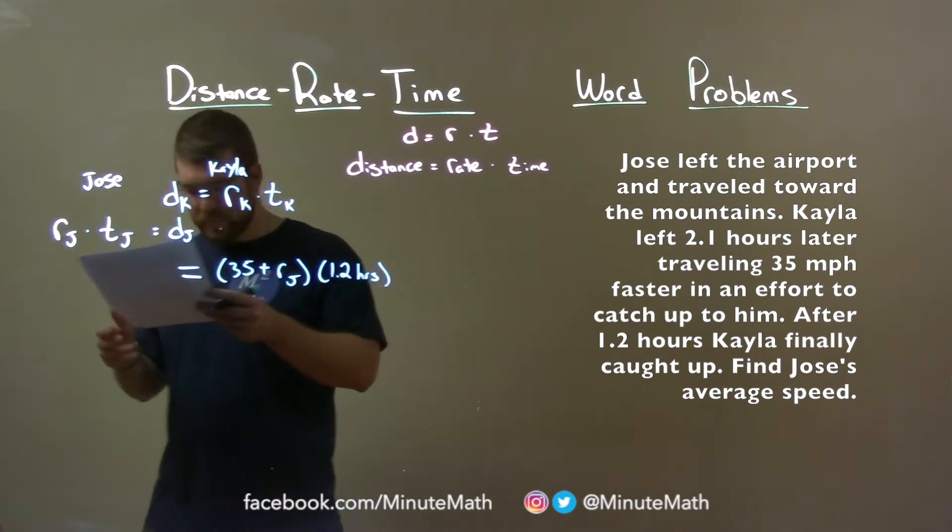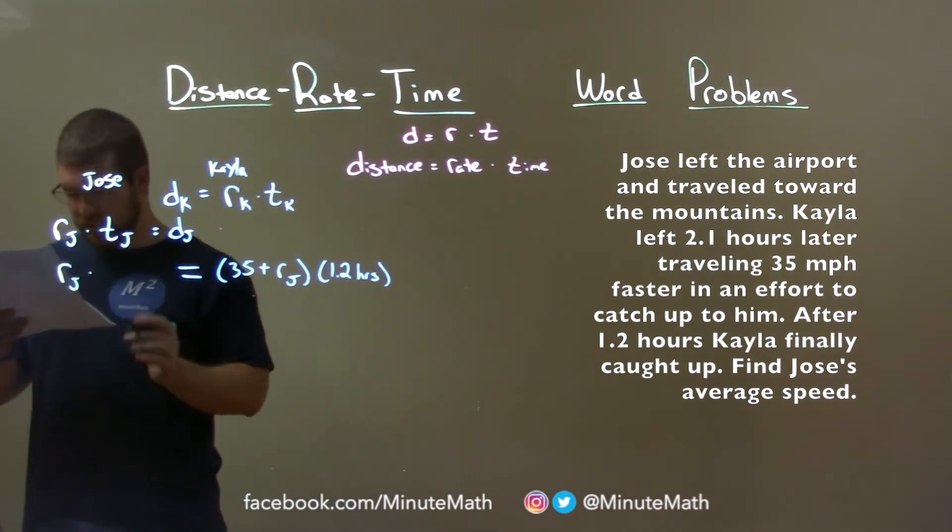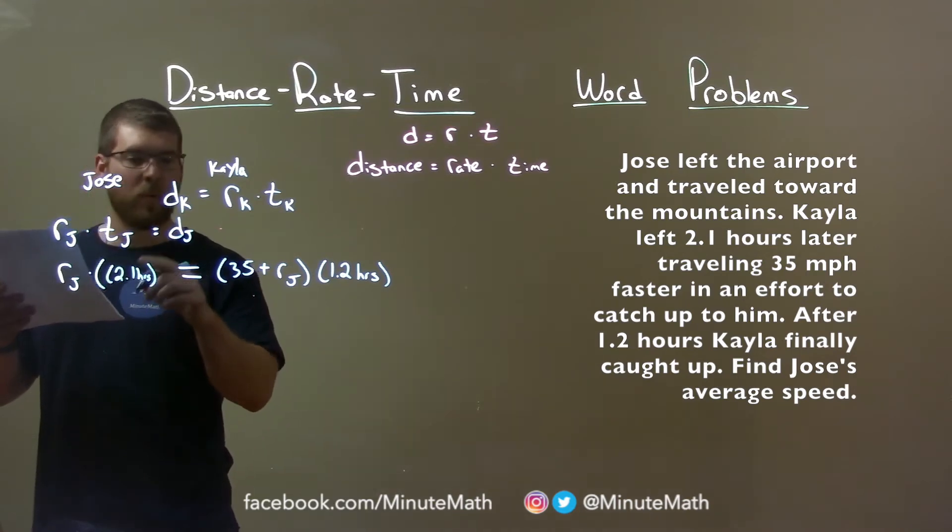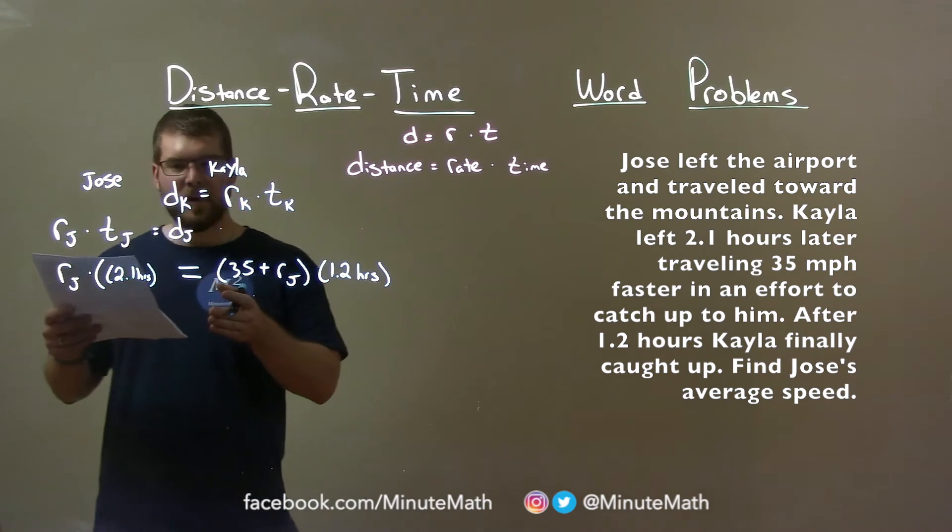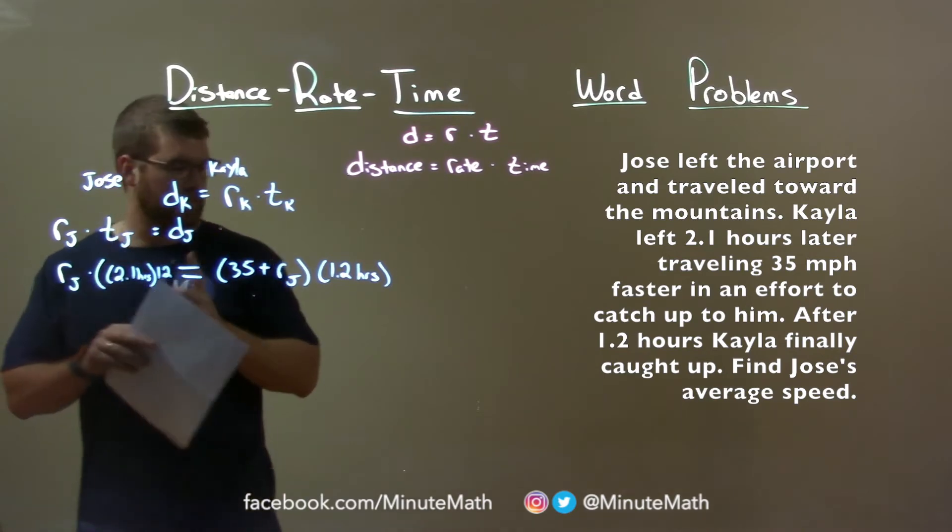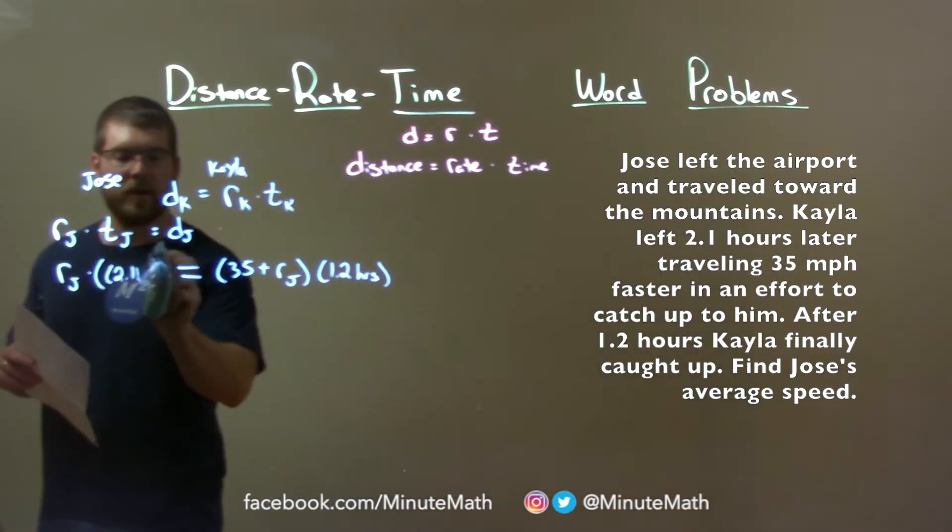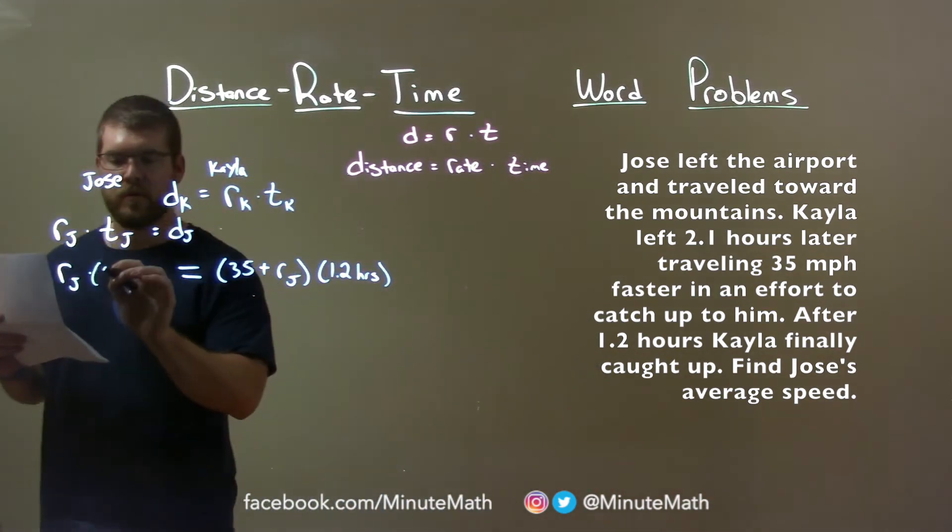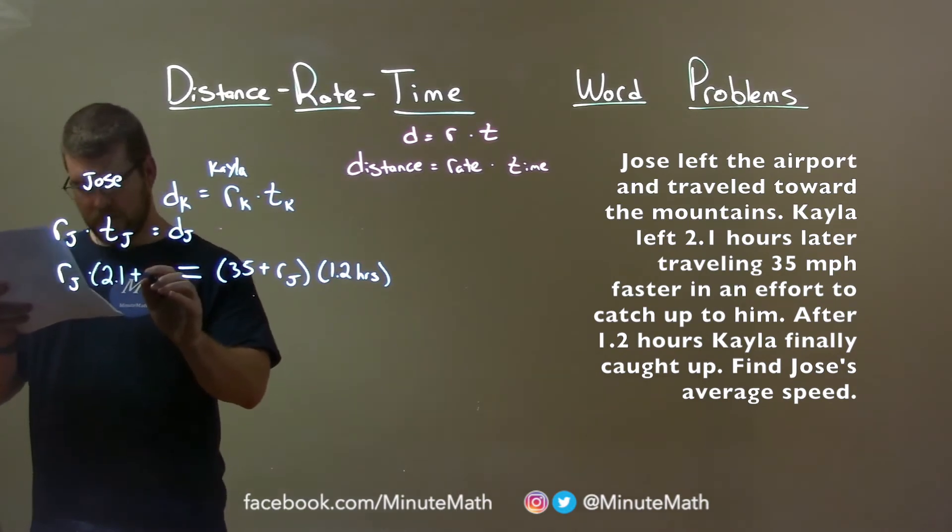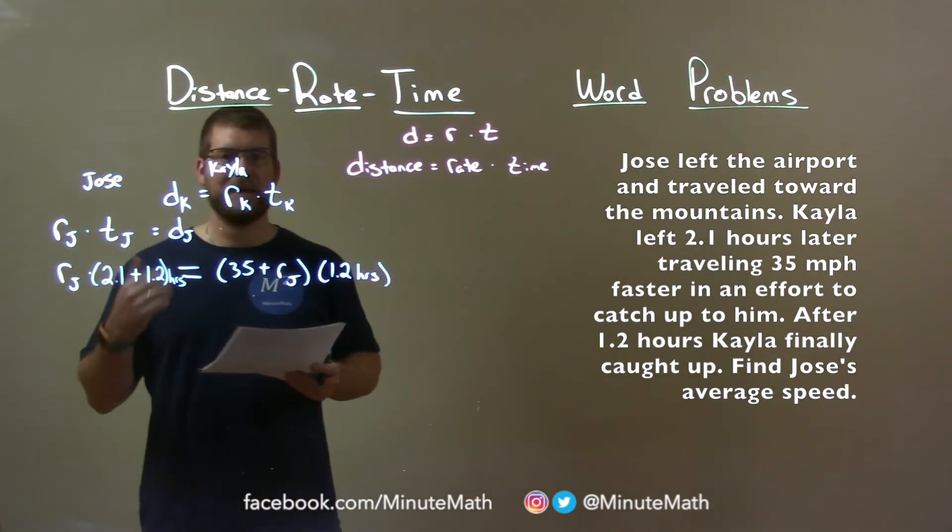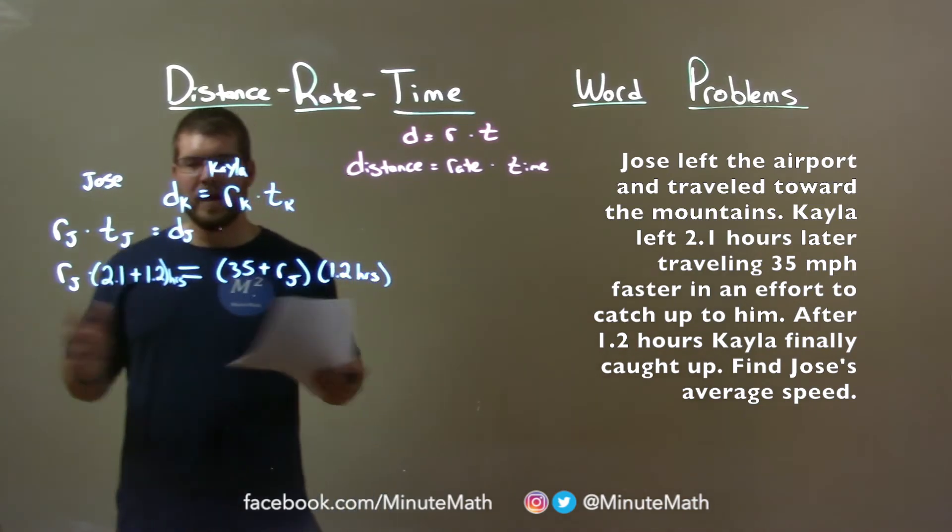Josie, on the other hand, we don't know Josie's rate. But Josie traveled a total of 2.1 hours plus the 1.2. So he was traveling 2.1 hours, then Kayla left and caught up to him plus that 1.2 hours that she drove. So we have 2.1 plus 1.2 hours. That's when they covered the same ground.